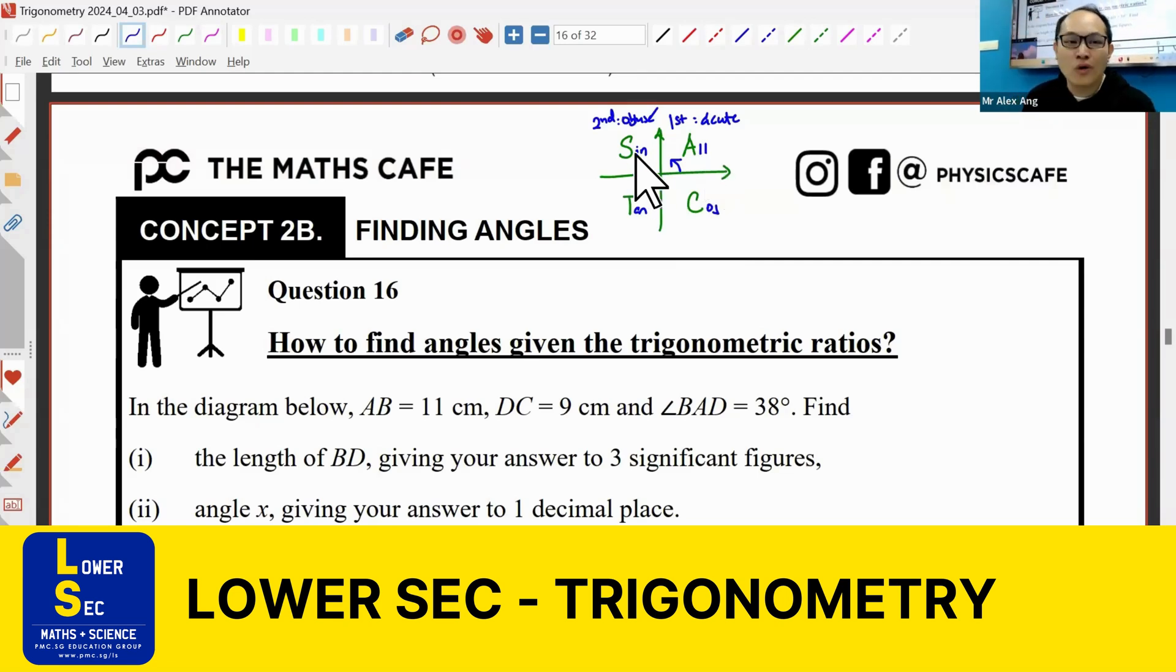S means only sine is positive there. If you think of this as a coordinate system, you will later be able to see - we can talk about it more.